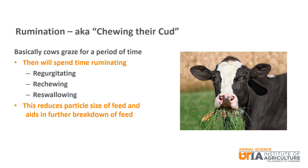Many people talk about cows chewing their cud — this is actually the rumination process. Cows will graze for a period of time and then ruminate, which basically consists of regurgitating, re-chewing, and re-swallowing the forages they have consumed. This works to reduce the particle size and aids in further digestion. Chewing cud is a very important part of the digestion process for cows.